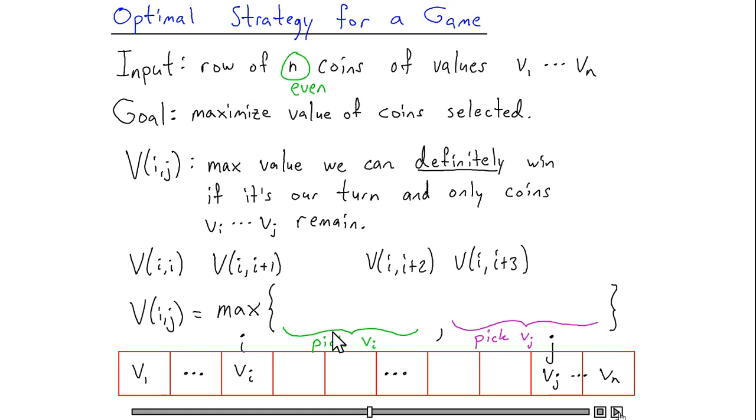Let's first focus on the case where we pick the i-th coin. If we go ahead and pick the i-th coin, then the remaining range is going to go from the i+1 coin up to the j-th coin, and our opponent will then have the choice of picking the i+1 coin or the j-th coin. If our opponent decides to pick the j-th coin, then we'll be reduced to the subproblem from i+1 to j-1. The best value that we can get, since it'll be our turn again at that point, is going to be V(i+1, j-1).